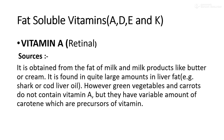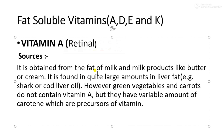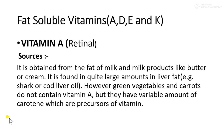Now let us look at the sources of Vitamin A. Vitamin A is also known as retinol. It is obtained from the fat of milk and milk products like butter and cream. It is found in quite large amounts in liver fat, for example shark or cod liver oil. However, green vegetables and carrots do not contain Vitamin A directly, but they have variable amounts of carotene, which are precursors of the vitamin.